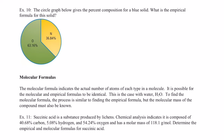All right folks, we're back. We're going to continue by doing another empirical formula example, then we're going to hop over to molecular formulas, which I think you'll like. So why don't you try Example 10: find the empirical formula of this compound that's 36.84 percent nitrogen and 63.16 percent oxygen. Pause the video and go for it.